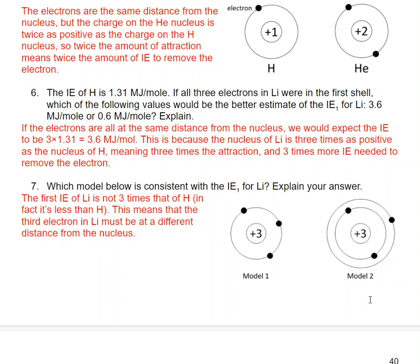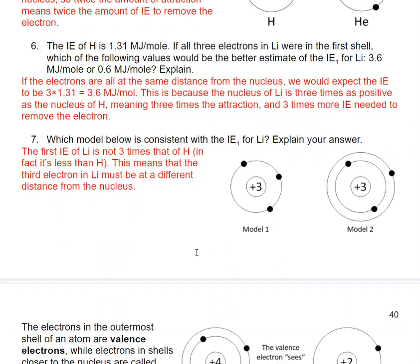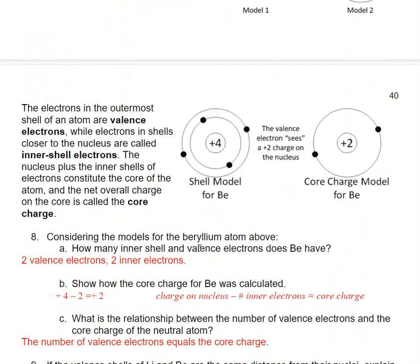Model 2 is more consistent with what we would expect because of that difference in ionization energy. It must mean that the first electron — that valence electron that gets pulled away — is further from the nucleus than the inner two. Valence electrons are in the outermost shell, and the ones closer to the nucleus are called inner shell electrons.